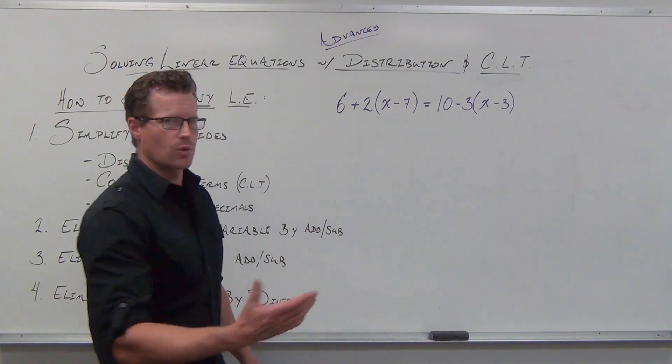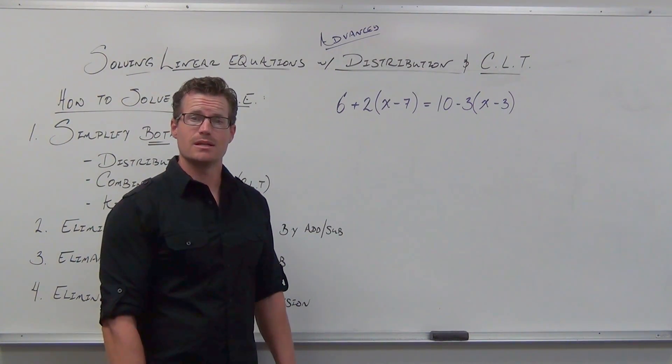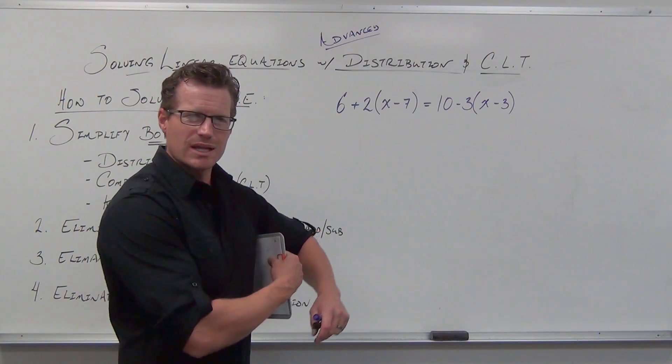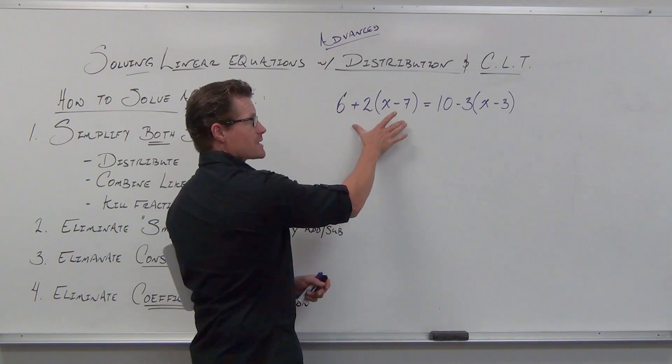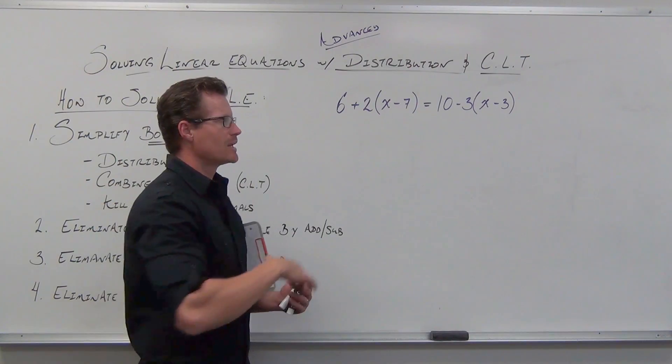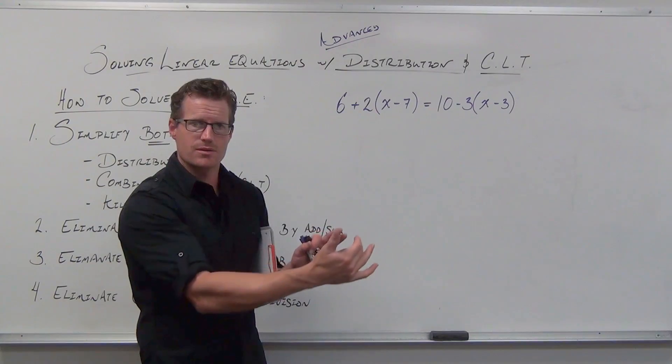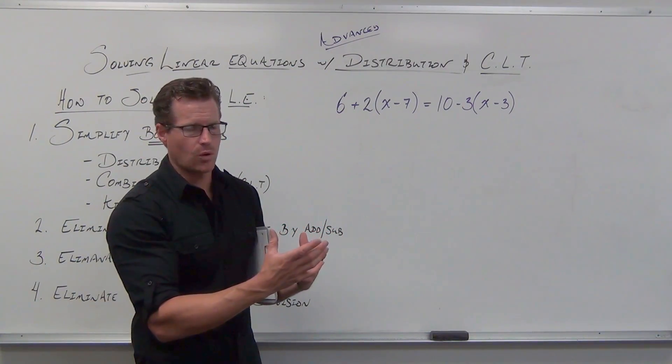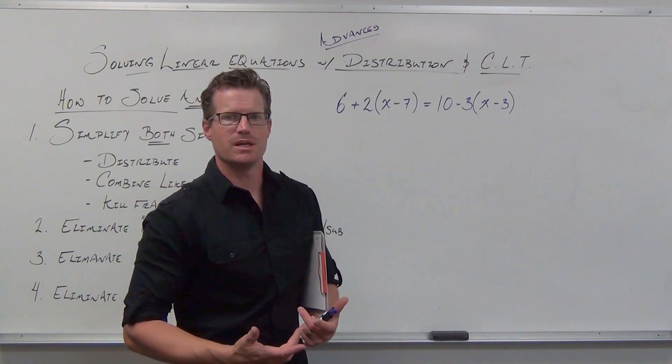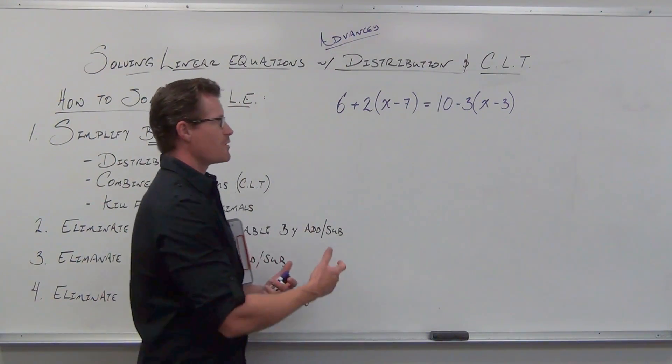So the first thing we do is identify a linear equation. After that, we're going to check to see if we need to simplify this equation. Now, when we simplify equations, it's really an expression idea on one side or the other. So we're going to look at just the left-hand side. Do you have to simplify it? Well, simplification means that you might have to distribute, you might have to combine some like terms, you might have to get rid of some fractions or decimals.